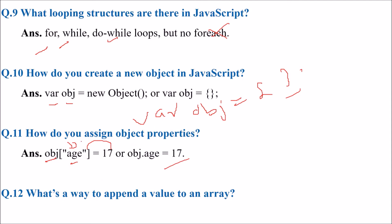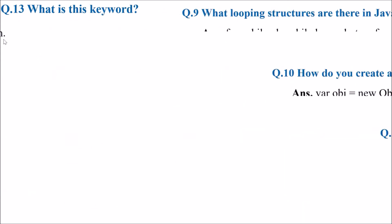What's a way to append a value to an array? arr[arr.length] equals value. This is how you append a value to an array, so the array gets one more value now.